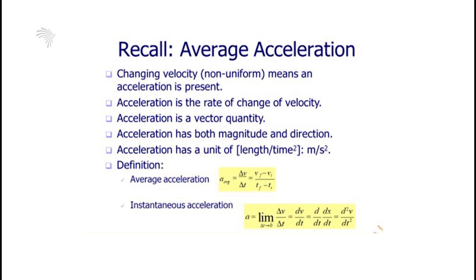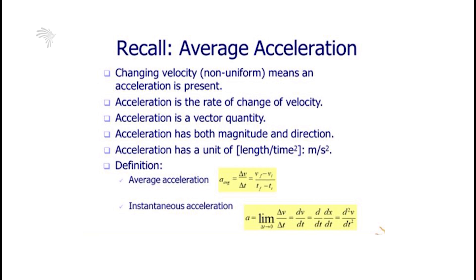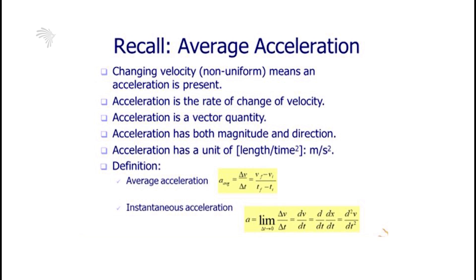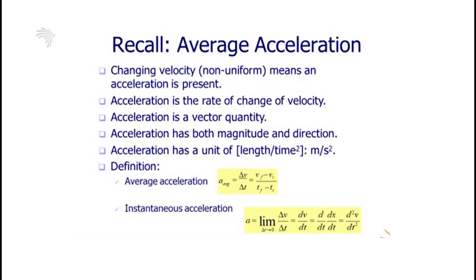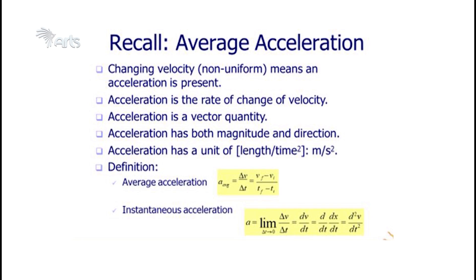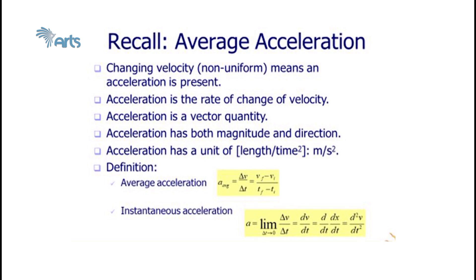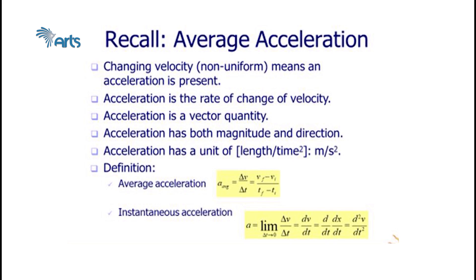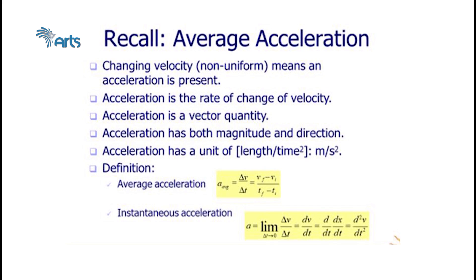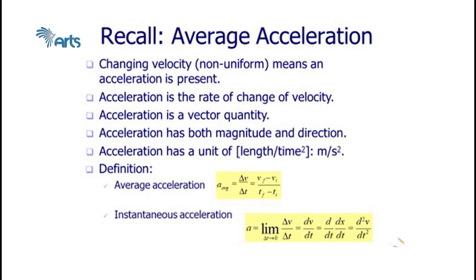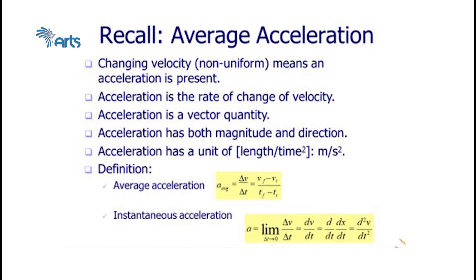In translational motion, average acceleration is defined as the time rate of change of velocity. It is a vector quantity with units of meters per second squared. Average acceleration equals final velocity minus initial velocity divided by time taken. Instantaneous acceleration is the acceleration of an object at any instant of time, calculated by the limit of Δv over Δt as Δt approaches zero, or the first derivative of velocity with respect to time, or the second derivative of position with respect to time.